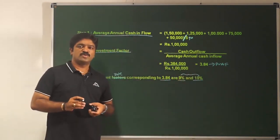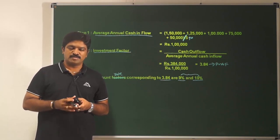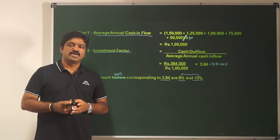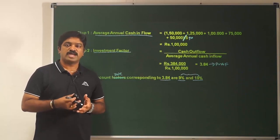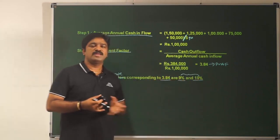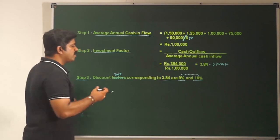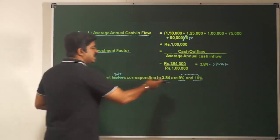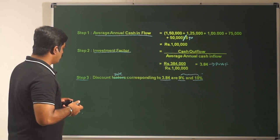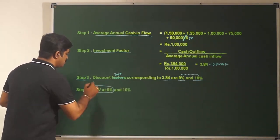But don't jump to the conclusion that your IRR is going to be between 9% and 10%, because your cash flows are not annuities — you don't have average cash flows; your cash flows have a different pattern. So it may not lie between 9% and 10%. Keeping that in mind, from 9% and 10% let's select one rate and find out NPV. That is Step 4: find out NPV at 9% first.